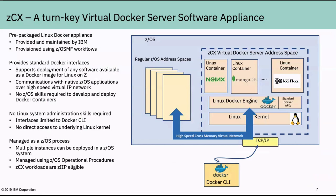One final thing: all the workloads running within ZCX — the Linux kernel, the Docker engine, and the containers themselves — are all zIIP eligible. So if you have zIIP processors on your ZOS system, these address spaces run primarily on those zIIP processors if that capacity is available. The key theme is finding use cases where you can complement your ZOS native software by bringing in Linux software in binary format packaged as Docker images, deploying them side by side with your ZOS native software, and managing the whole infrastructure from a ZOS perspective.